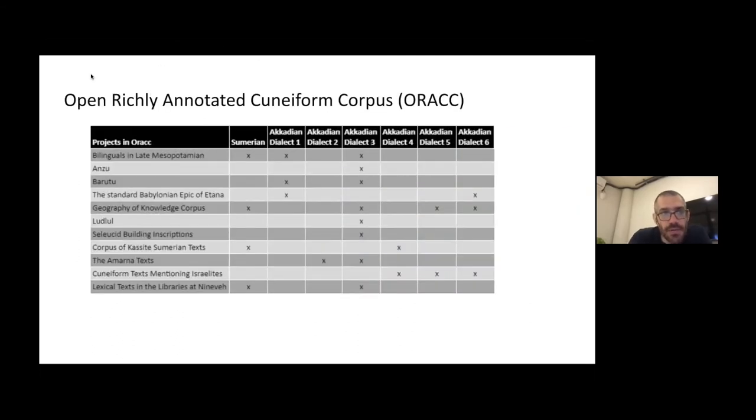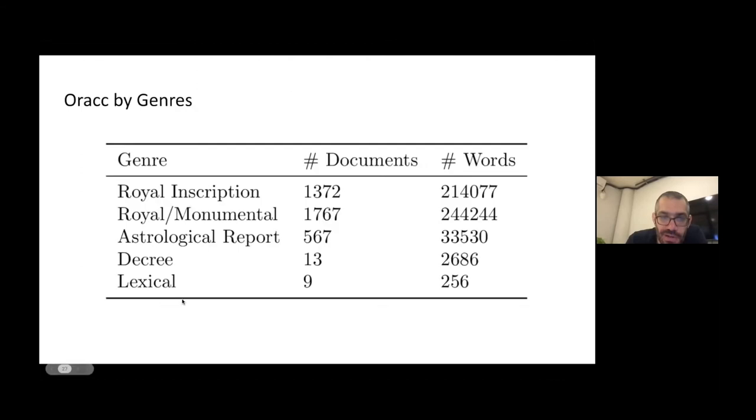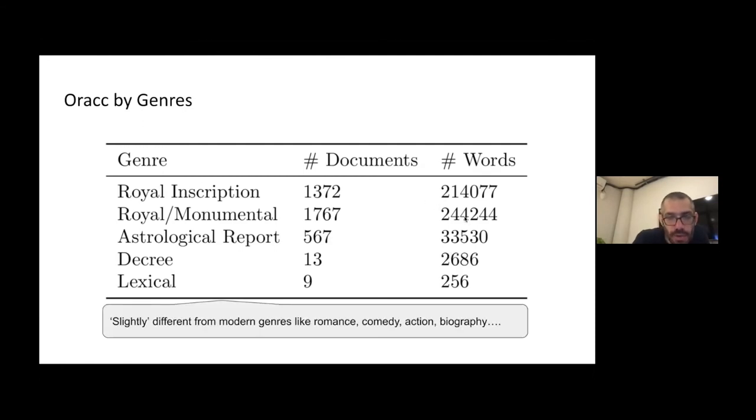The data that we use is called ORAC or Open Richly Annotated Cuneiform Corpus. There's many dialects - these are the different columns and different rows are different actual physical excavation sites. Places that archaeologists found records of this language. If we look at the number of words that we have, overall we have around a million words if you sum this column. Compare a million words to three billion words in English that we use to train BERT. So this is orders of magnitude smaller. The genres are very different than nowadays - royal inscription, astrological reports, and all these sorts of very time dependent genres.